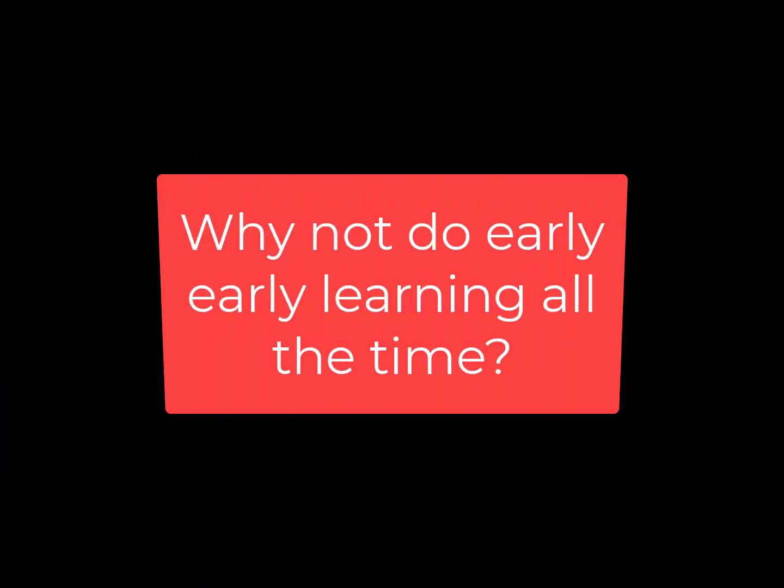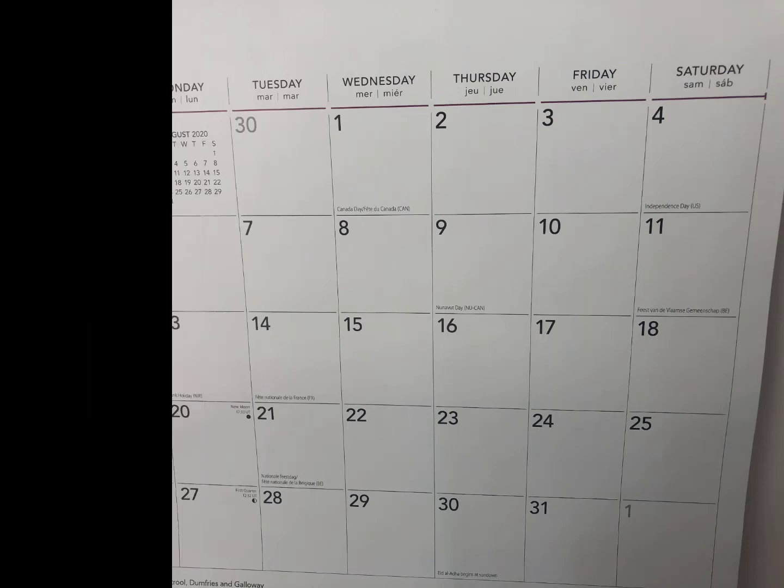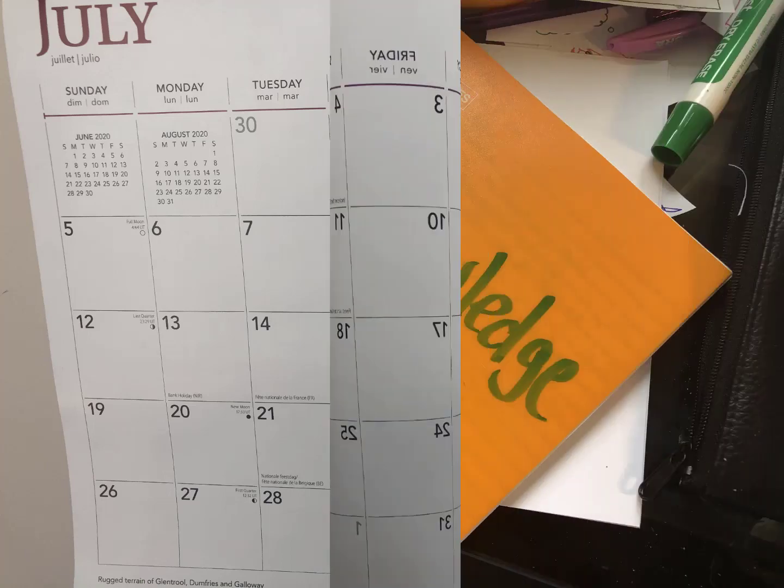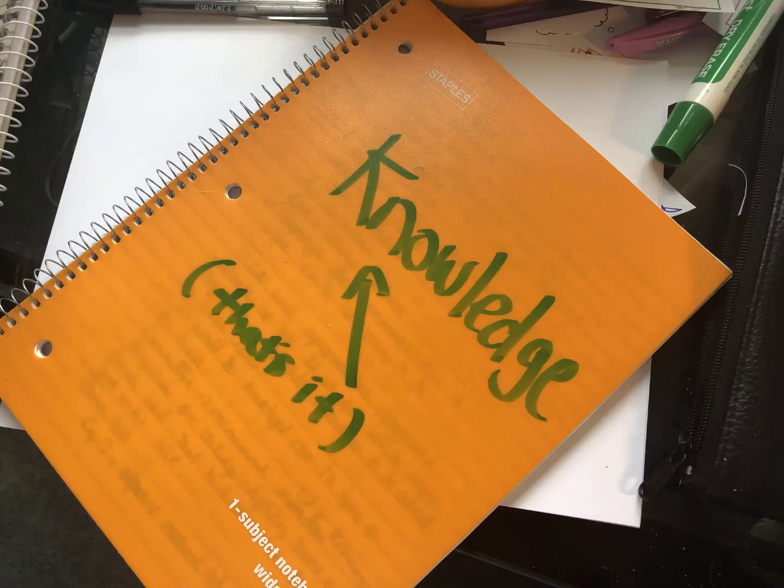Why don't we do early learning all the time? It's because we get very excited about dates on the calendar and forget about needing to focus on the flow of knowledge.